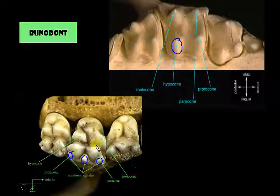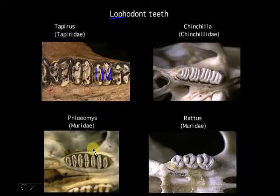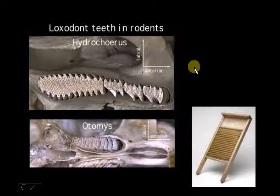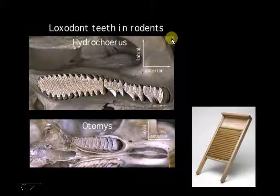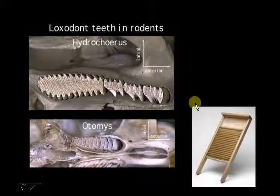Next are lophodont teeth — 'loph' means ridge — so the main cusps are connected by lophs, or ridges. Lophodont dentition is found mostly in granivorous, graminivorous (seed and grain eaters), and herbivorous mammals. There is also a special type of lophodont called loxodont teeth, found in elephants — hence the genus name Loxodonta. Loxodont teeth look like a washboard pattern; it's still lophodont but with that characteristic washboard appearance. You also find this in some rodents.